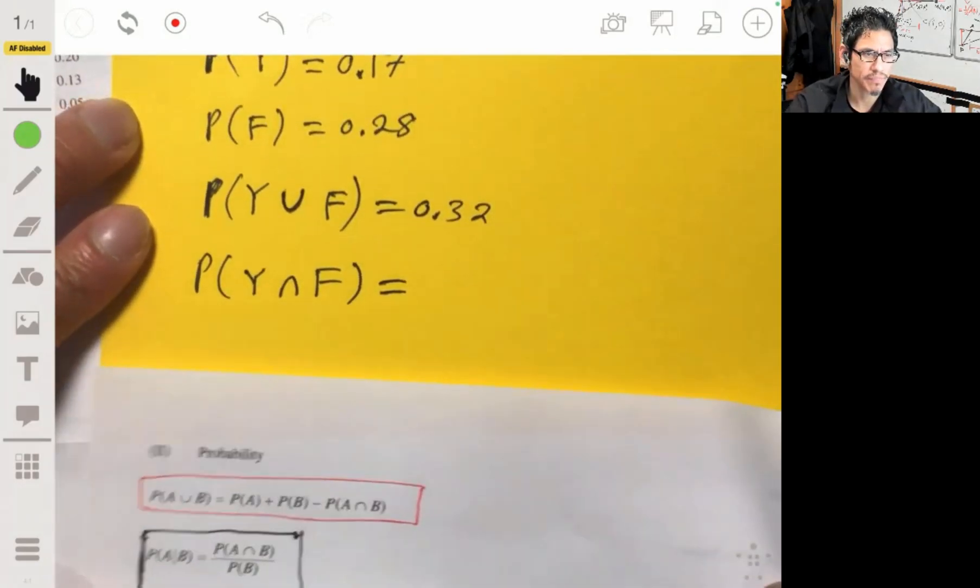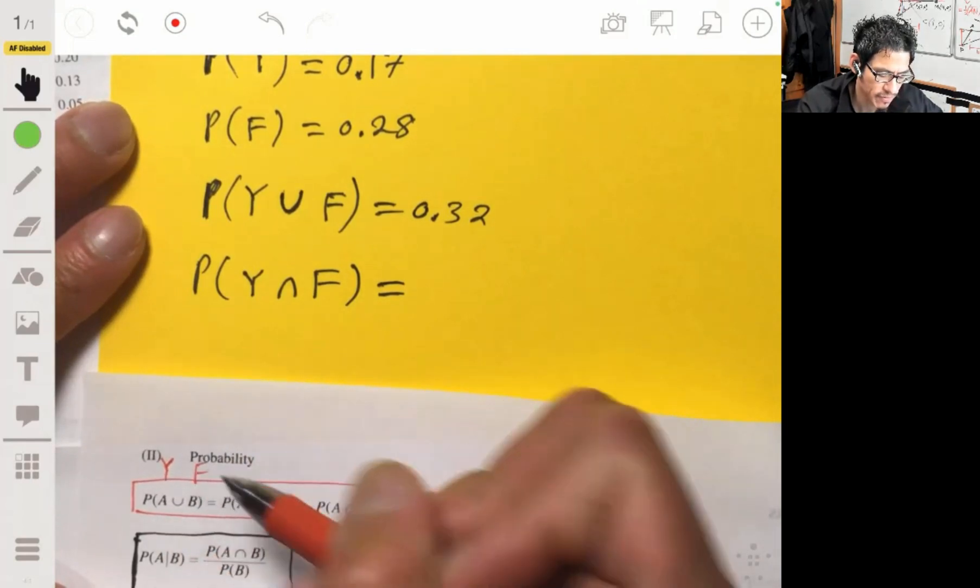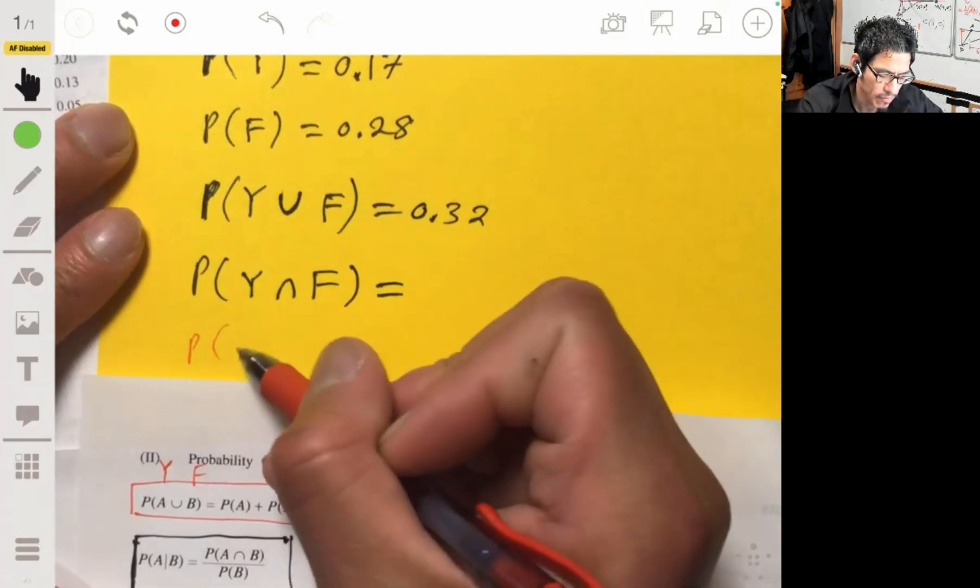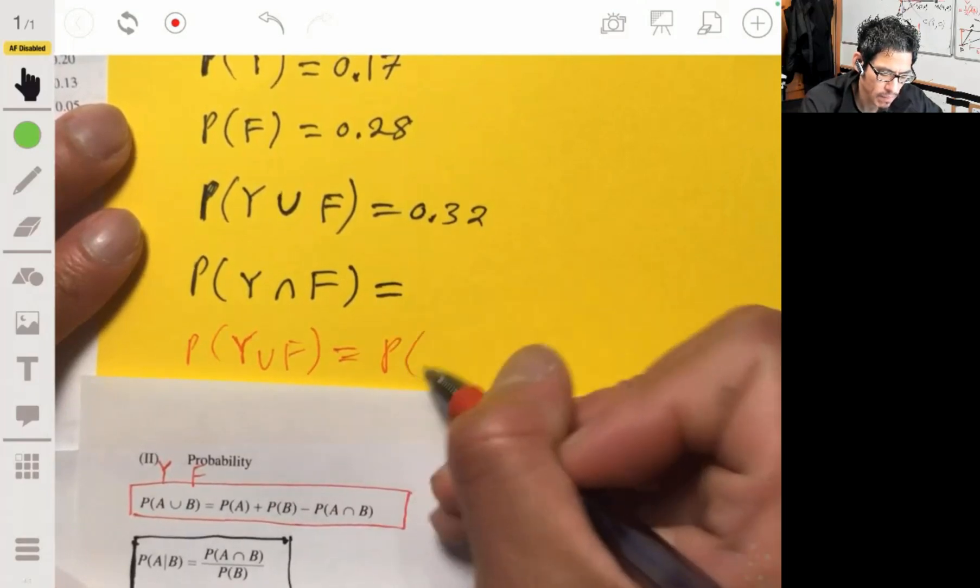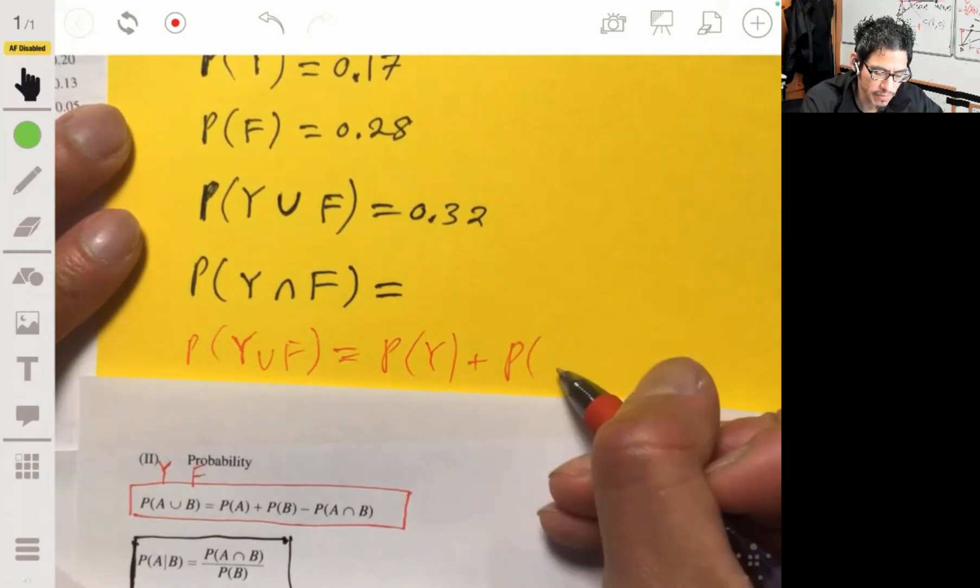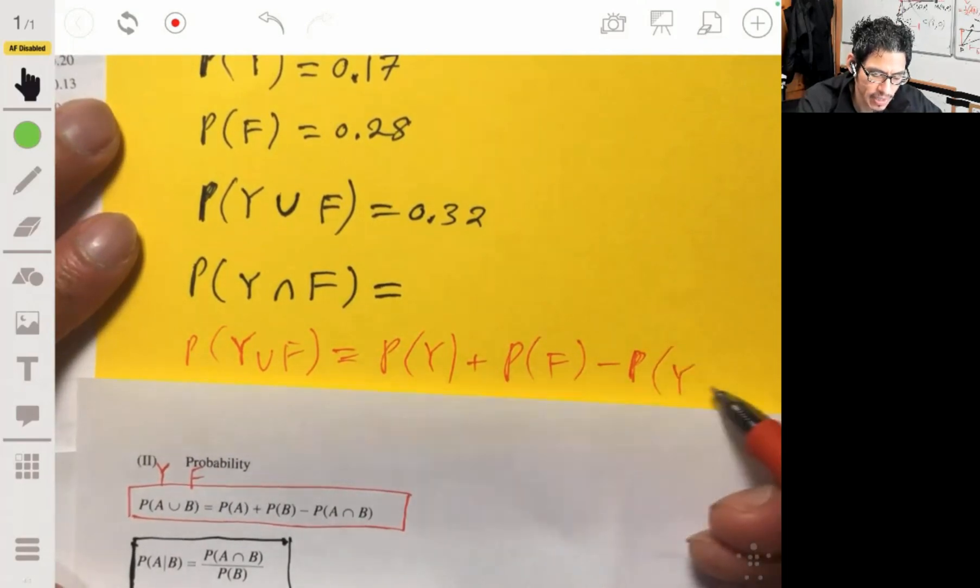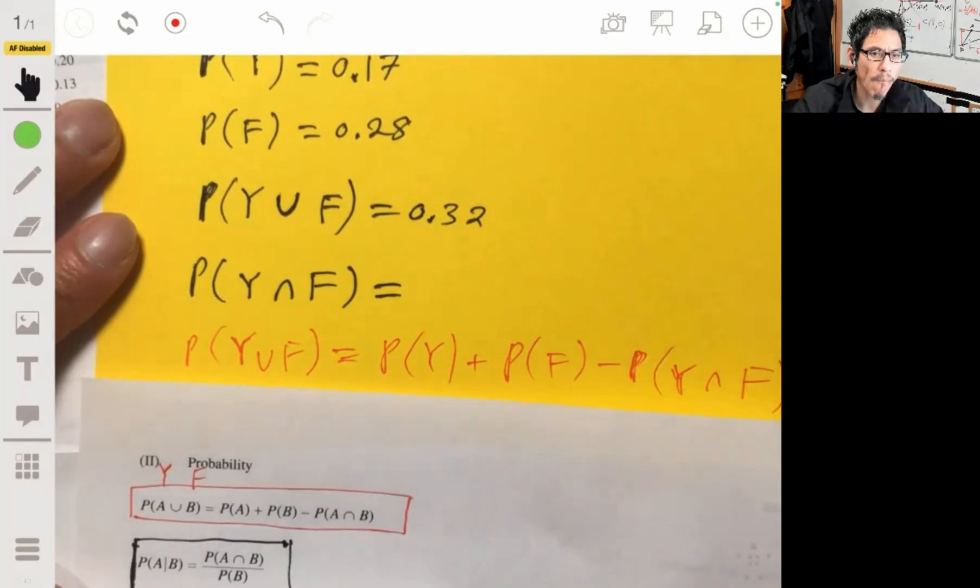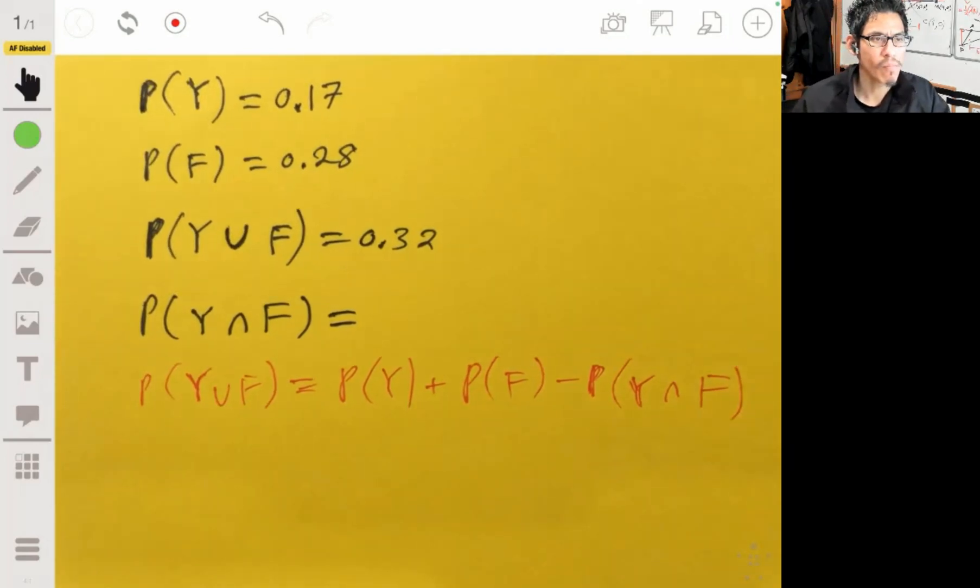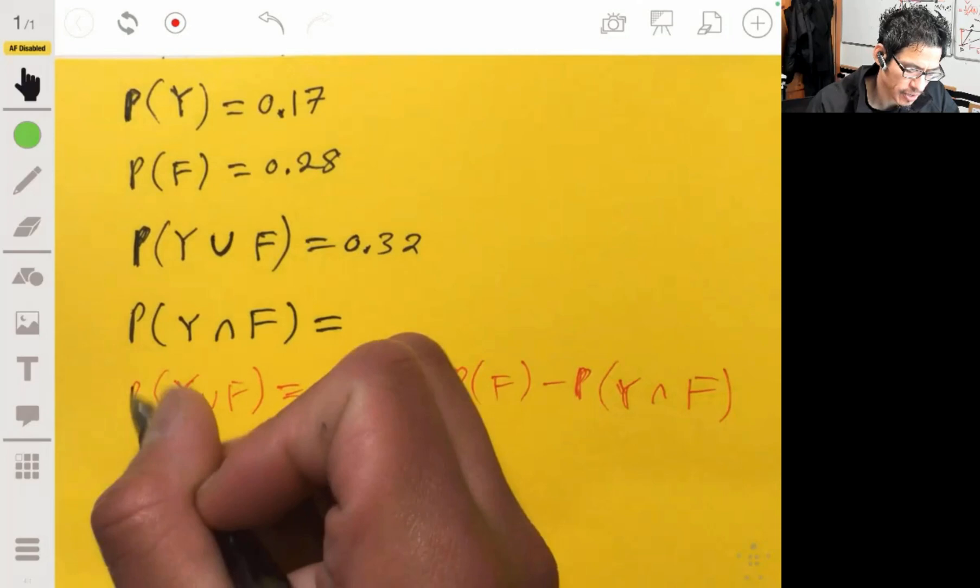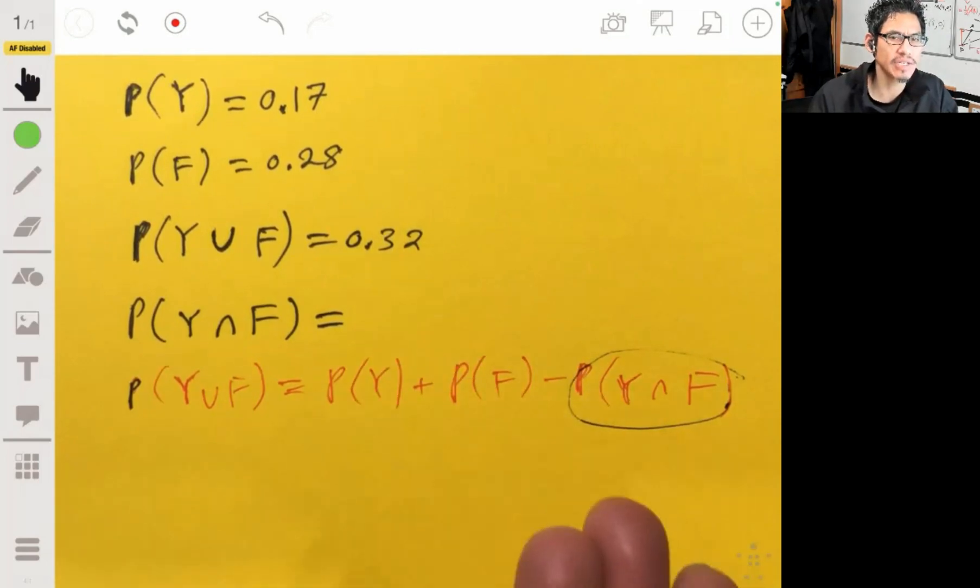So, moving this down, you can see I'm not making this up. The probability of, so let's make A as Y and let's say B is F. The probability of Y union F is equal to the probability of Y plus the probability of F minus the probability of them both occurring, probability of Y and F, Y intersect F. Now, from here, we're trying to find this, and we already have the other one. So it just becomes a simple algebra equation.